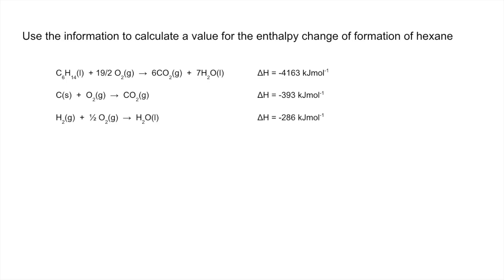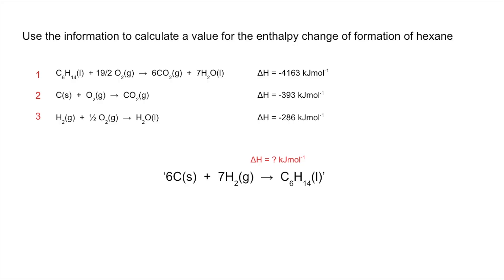You'll probably notice these are all combustion values, so you could use a combustion cycle or the cheat formula — but I'm going to use this new equations method. The way it works is you write a chemical equation for the reaction whose enthalpy change you need. We've been asked for the enthalpy change of formation of hexane, so we write that equation with the enthalpy change as unknown. I'll number the three given equations, and the goal is to construct our target equation from them — a bit like simultaneous equations.